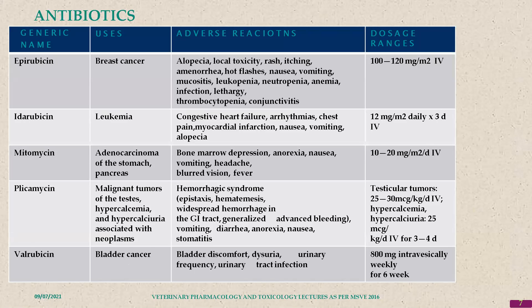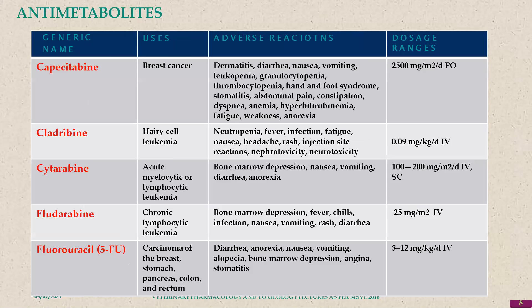Antimetabolites are drugs which stop the metabolism of cancer cells. One example is used in breast cancer with dermatitis as an adverse effect. The adverse effects can be more than the therapeutic effects, so benefit-to-risk ratio must be checked. The dose is 2500 mg per square meter of body surface.